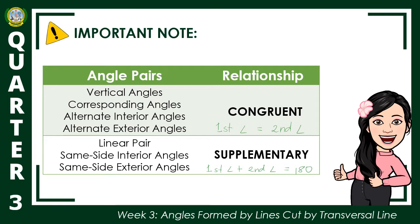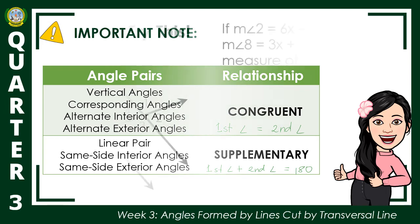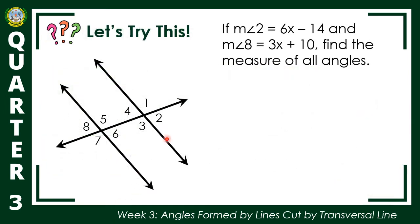Let's try to apply what we have learned. If the measure of angle 2 is 6x minus 14 and the measure of angle 8 is 3x plus 10, find the measure of all angles. We have 8 angles to find, but before that, we need to find first the value of x.